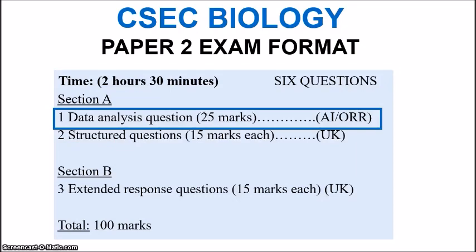Here's a look at the exam format for the CSET Biology Paper 2. It's important to note that the first question on the paper is a data analysis question, and this is worth 25 marks. It's going to test the ANI — which is Analysis and Interpretation — plus ORR, which is Observation, Recording and Reporting.